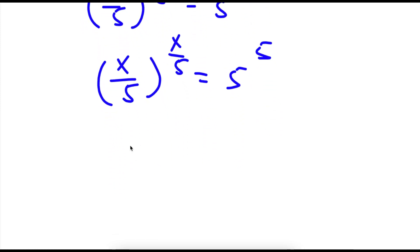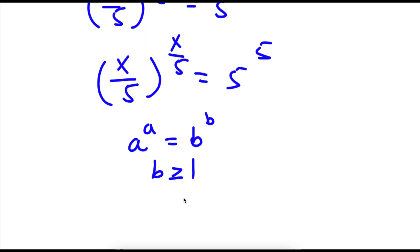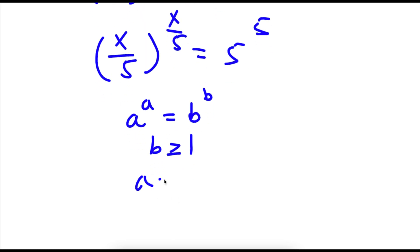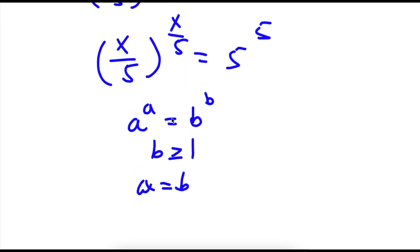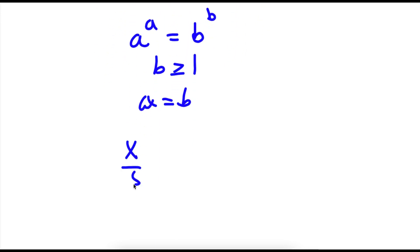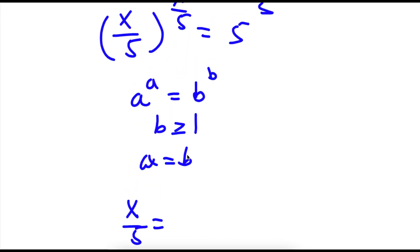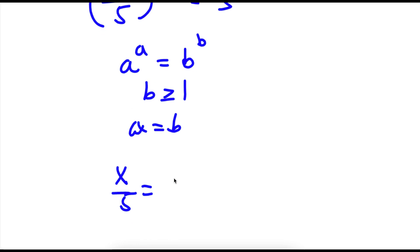Now if I have something in the form a to the power of a is equal to b to the power of b, and b is greater than or equal to 1, then this means that a is equal to b. And in this case, b is equal to 5, which is greater than or equal to 1, meaning x over 5 is equal to 5.